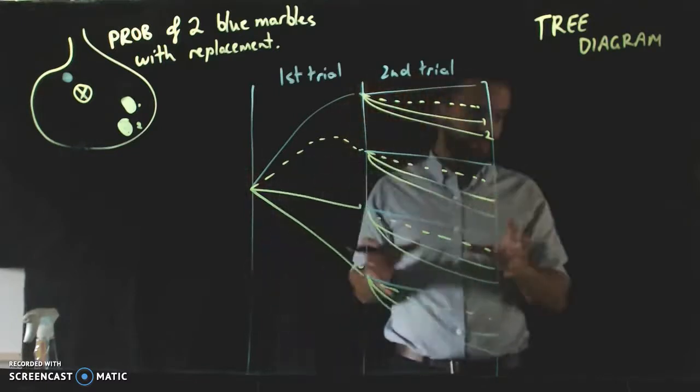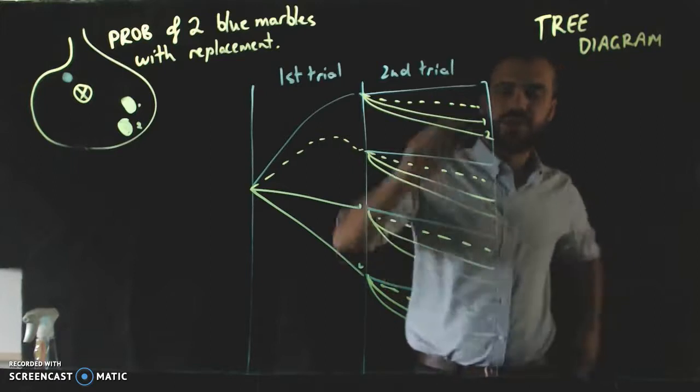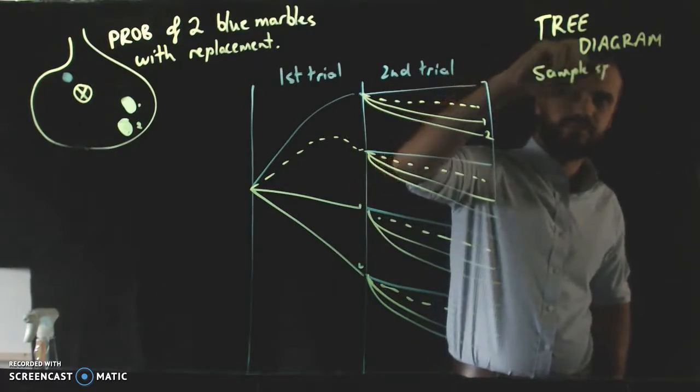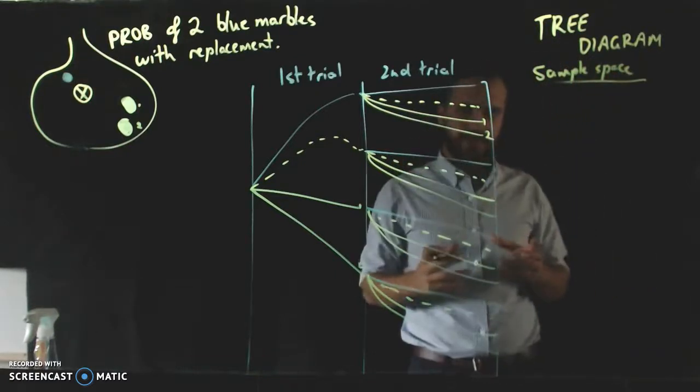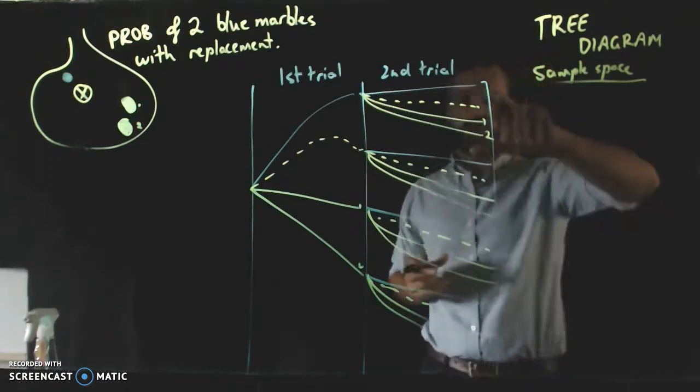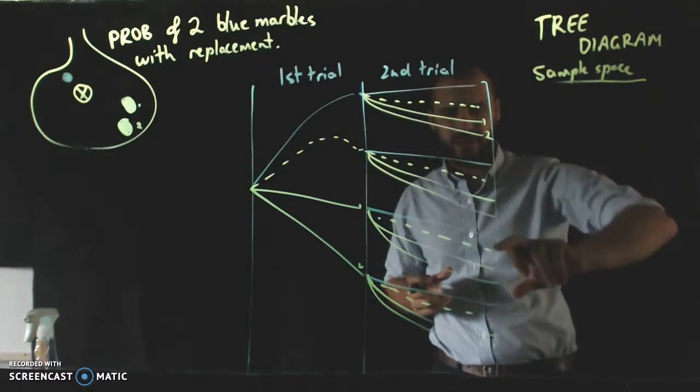Now, tree diagram is useful for a couple of things. First of all, using this tree diagram, I can figure out what the sample space is. That's all possible outcomes. Now, all we need to do is count how many branches there are at the very end of our tree diagram. 1, 2, 3, 4, 5, 6, 7, 8, 9, 10, 11,